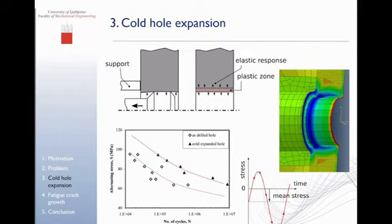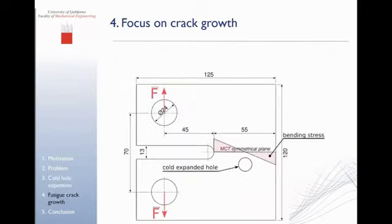We see this in this example where white dots represent a hole that's not cold expanded, and black triangles with expanded. We see that in the S-N curve the life is improved. This has been the state of the art. Not much research has been done in the last 10 years or so. We are focusing on something a bit different but still considered to be part of this cold hole expansion process.